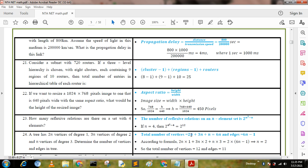Total number of vertices: 2n plus 3n plus n equals 6n, and edges is 6n minus 1. According to formula: 2n times 1 plus 3n times 2 plus n times 3 equals 2 times (6n minus 1). Here n equals 2, so the total number of vertices equals 12 and edges equals 11.